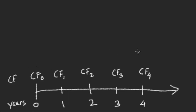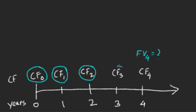Now how can we find the future value after four years? Not for only a single amount like CF0 or CF2 or CF3, but for all of them — CF0, CF1, CF2, CF3, and CF4. So what is the combined future value after four years? Finding the combined future value after four years is not the same as finding the future value of a single cash flow, but it is not difficult at all. What you have to do is find out the future value of each and every cash flow individually and then add those to find the total future value.